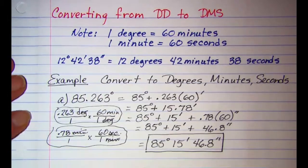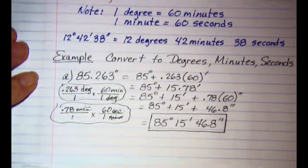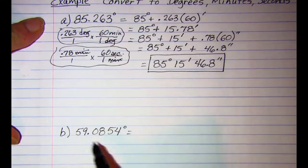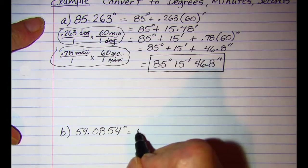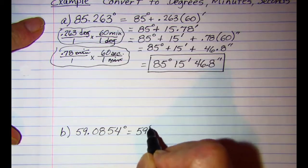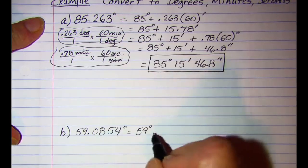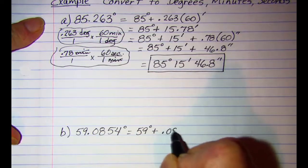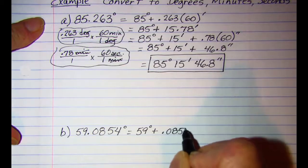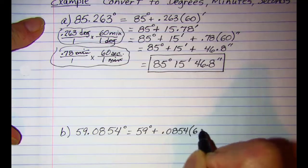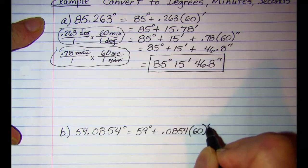Let's do another example, our 59 degrees is okay, we want 0.0854 times 60 to get us to minutes.